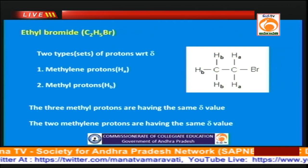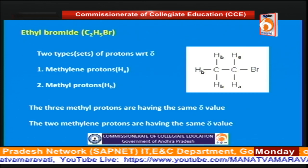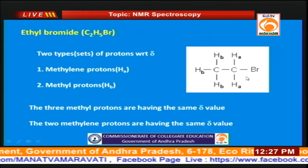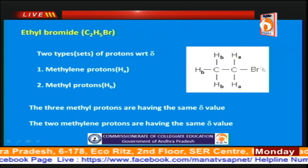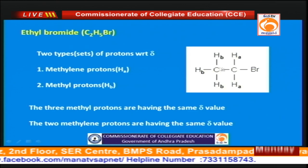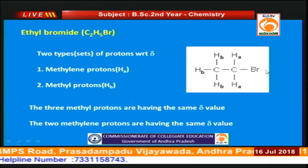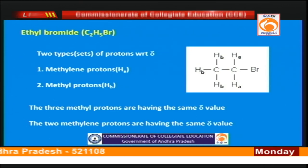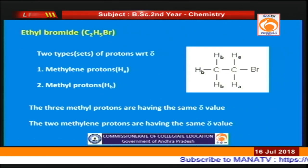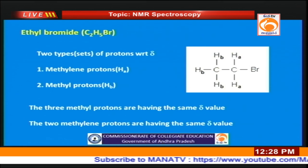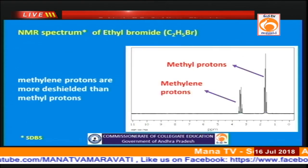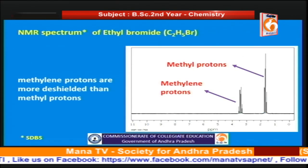Now let us take the case of ethyl bromide. In ethyl bromide there are two types of protons based on chemical shift, because the methylene (CH₂) protons are near the electronegative bromine atom, whereas the methyl protons are far away from the bromine atom. Therefore there are two sets of protons: methyl protons and methylene protons. All three methyl protons (indicated as HB) have the same δ value, whereas the two methylene protons (indicated as HA) have the same δ value. In the NMR spectrum we see two peaks: one for the methyl protons and one for the methylene protons.